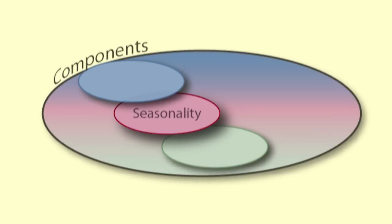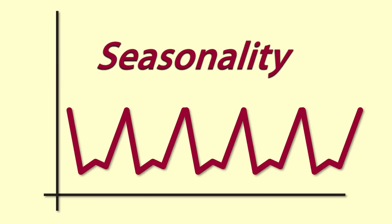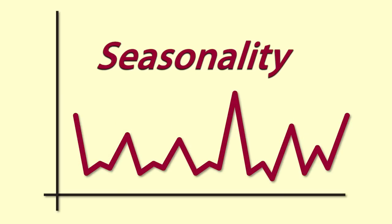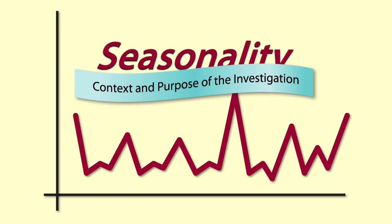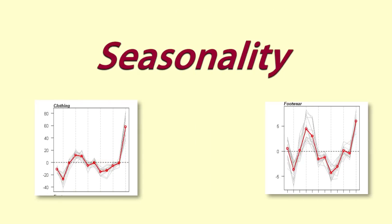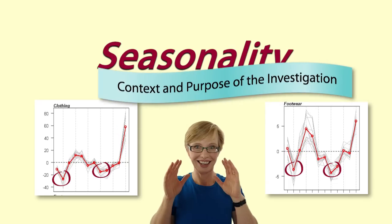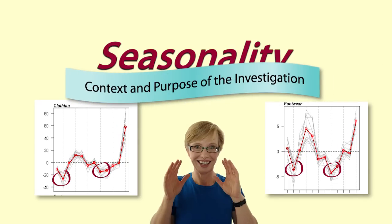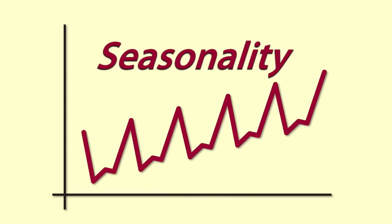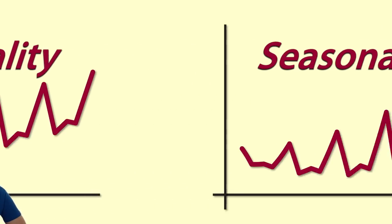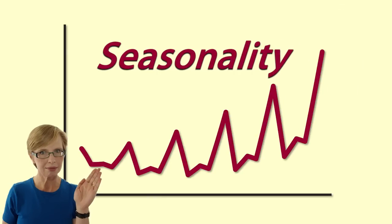Next, seasonality. How regular is the seasonality? Is it pretty much the same over the life of the series or does it change? How does this relate to the context and purpose of the investigation? For example, a consistent seasonal pattern relates to a clear real-life pattern. What is the shape of the seasonality? This can be really interesting — where are the peaks and drops, and how does this relate to the context and purpose of the investigation?